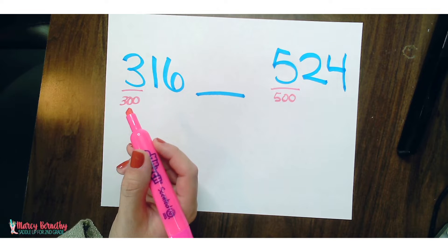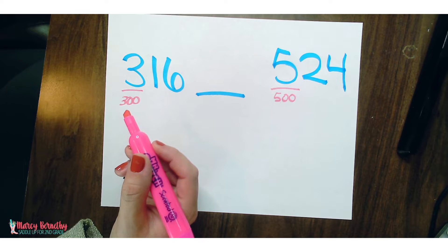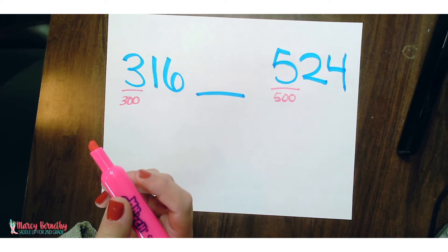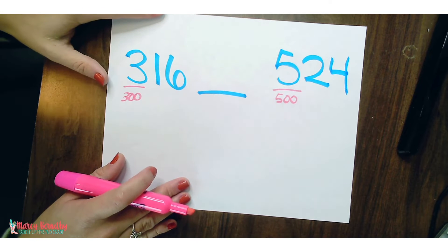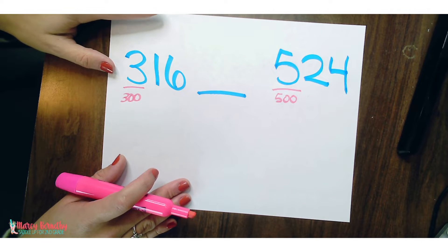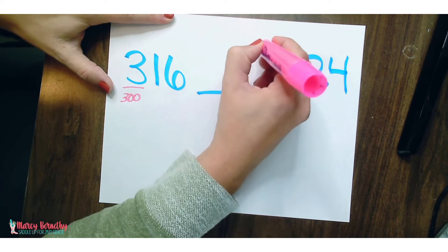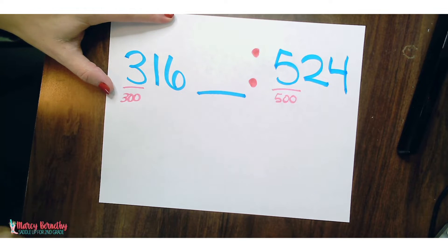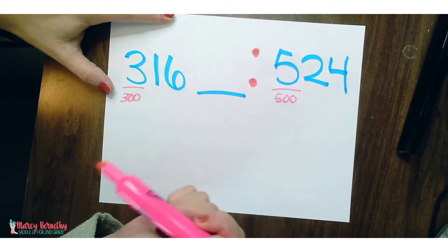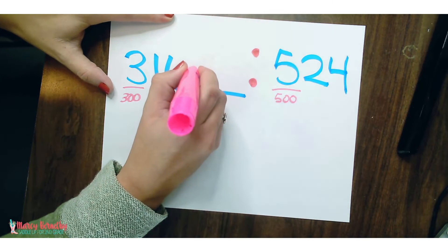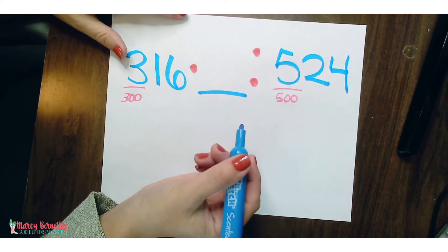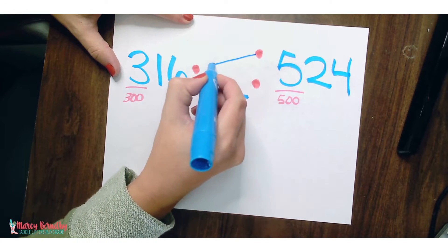Now when it comes to comparing numbers, they have to draw symbols and it can get really tricky. Students tend to get confused on which way they should be drawing the symbols correctly to go along with the correct vocabulary term. So this is where the dot method comes into play. They are going to draw two dots next to the larger number. So the first thing they need to identify is the larger number. They're going to draw two dots next to it. Then they're going to add a single dot next to the smaller number. Then they are going to draw lines to connect the dots to form the correct symbol.